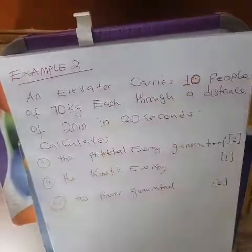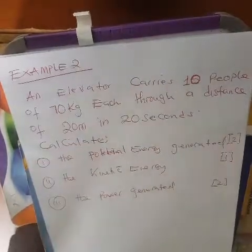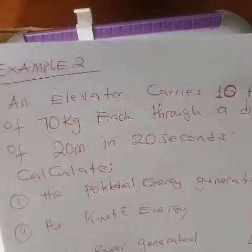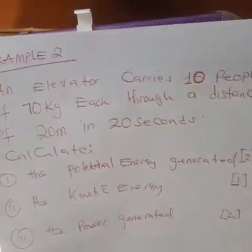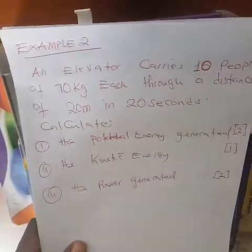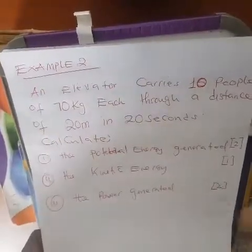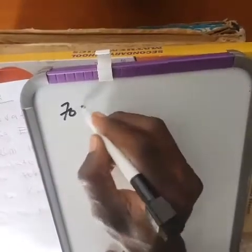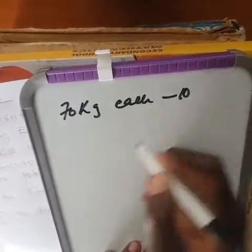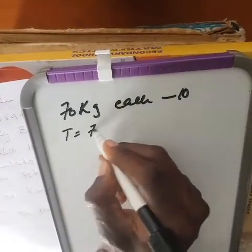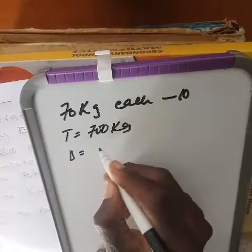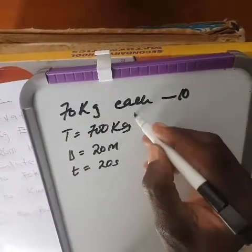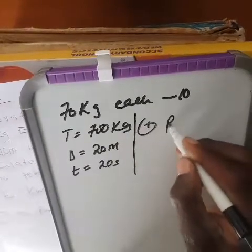Here is another example: an elevator carries 10 people of 70 kg mass each, a distance of 20 meters in 20 seconds. Calculate the potential energy, kinetic energy, and power generated. If you want, pause the video and try it yourself first. The total mass is 10 × 70 = 700 kg, distance is 20 meters, and time is 20 seconds.